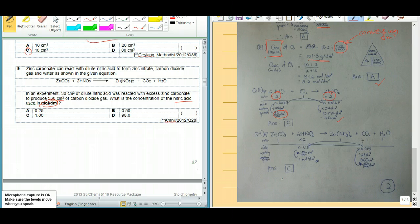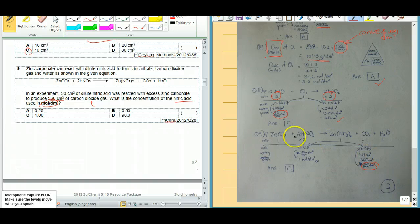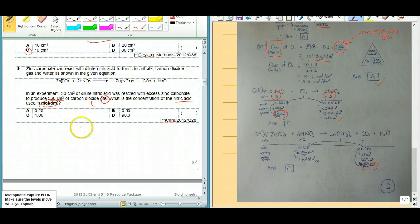So we know that the starting point should be most probably starting from the carbon dioxide gas. So 360 divided by 1000 is because of the conversion to dm³. Then you divide by 24 dm³ because 360 cm³ is talking about the gas. So we get 0.015 moles of carbon dioxide.